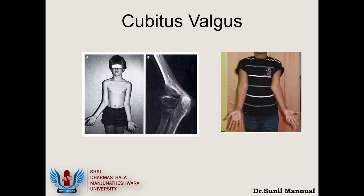This child on the left is normal, but on the right has cubitus valgus. Cubitus valgus is most commonly seen as a complication of non-union of a lateral condyle fracture especially in a growing child. The lateral condyle fracture has not united, so there is continued growth on the medial side but no growth on the lateral side, leading to asymmetric growth and cubitus valgus.